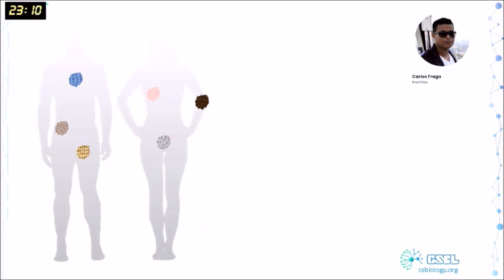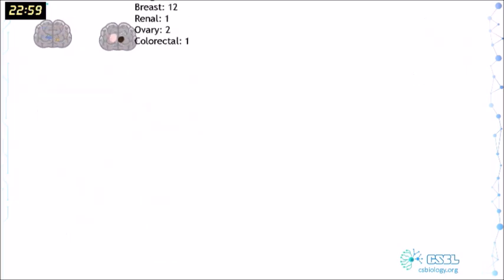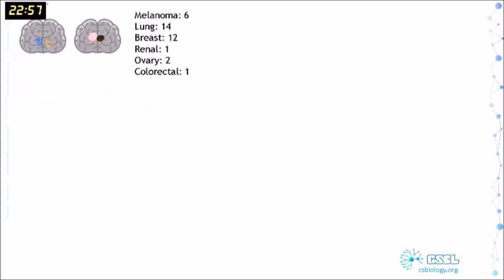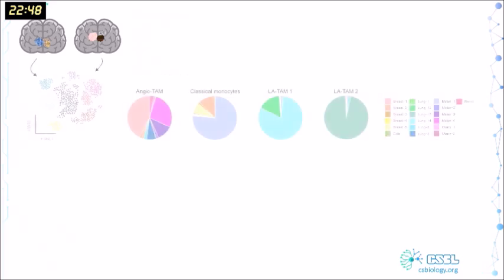Just an example of how we use machine learning is Carlos's paper, where he took several brain metastasis samples that came from different origins—melanoma, lung, ovary, renal cancers—and we wanted to understand what are the common mechanisms between these metastases, why they go to the brain and install there.